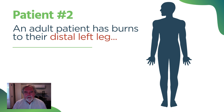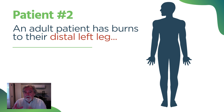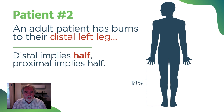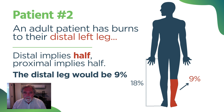Patient number two: an adult patient has burns to their distal left leg. There are two reasons we get Rule of Nines questions wrong — one is getting the numbers and math wrong, and the other is reading wrong. Distal implies half, and proximal implies half. A leg is 18%, so the distal leg would be 9%, much like the proximal leg. Look for qualifying words that may modify the amount. Arms are each 9%, legs are each 18%.